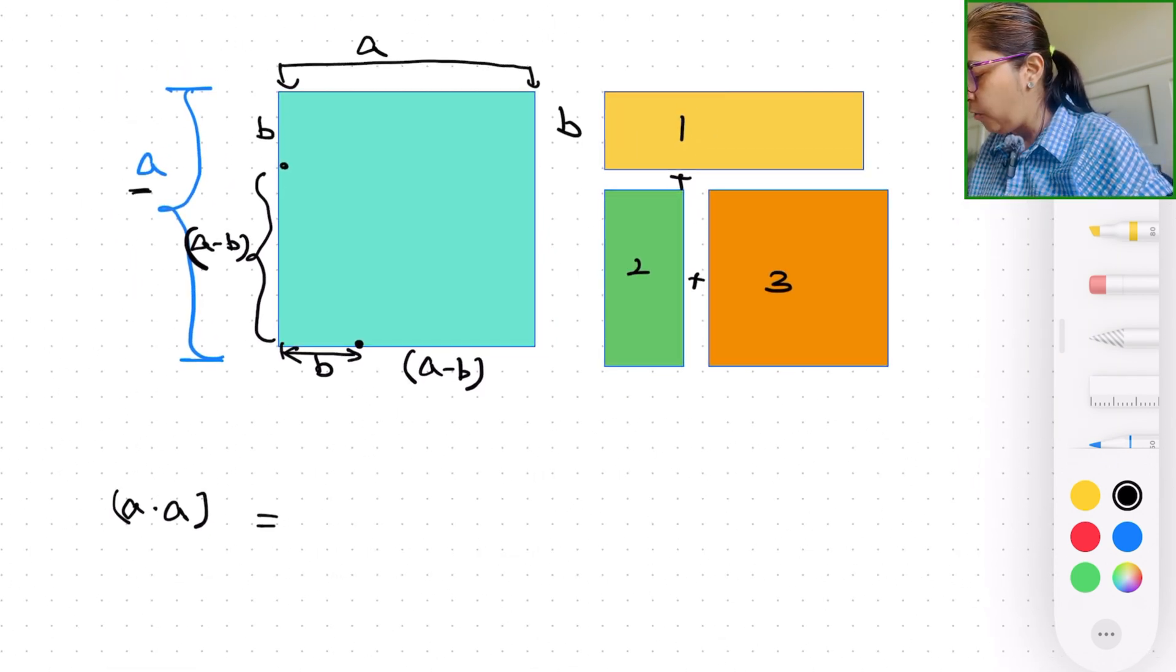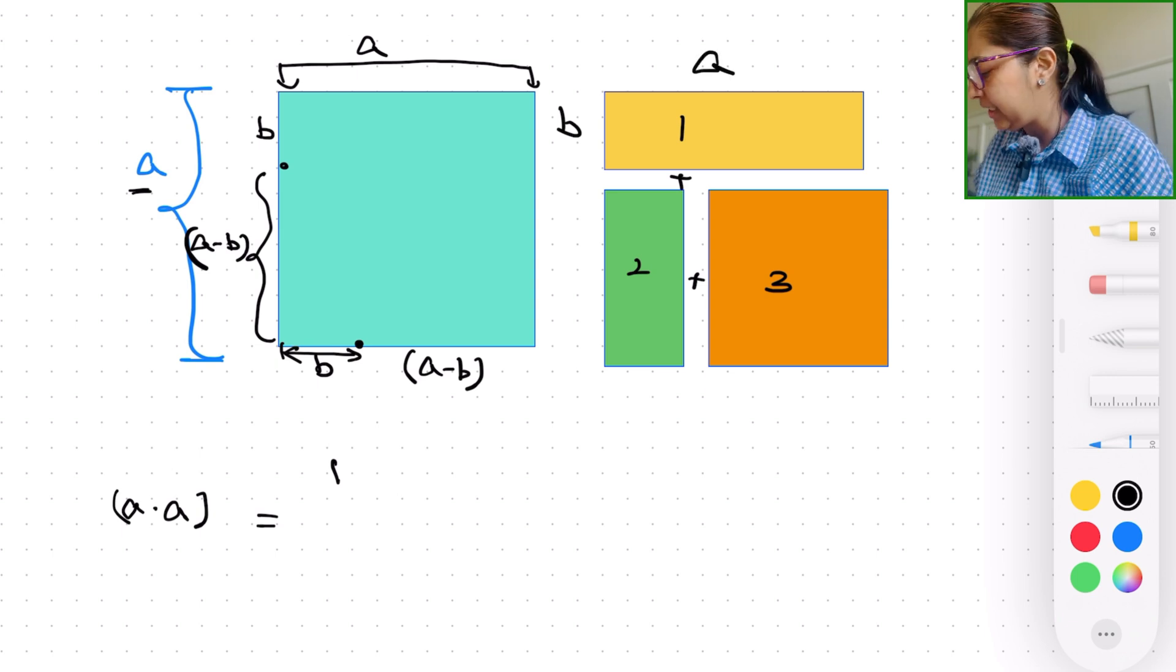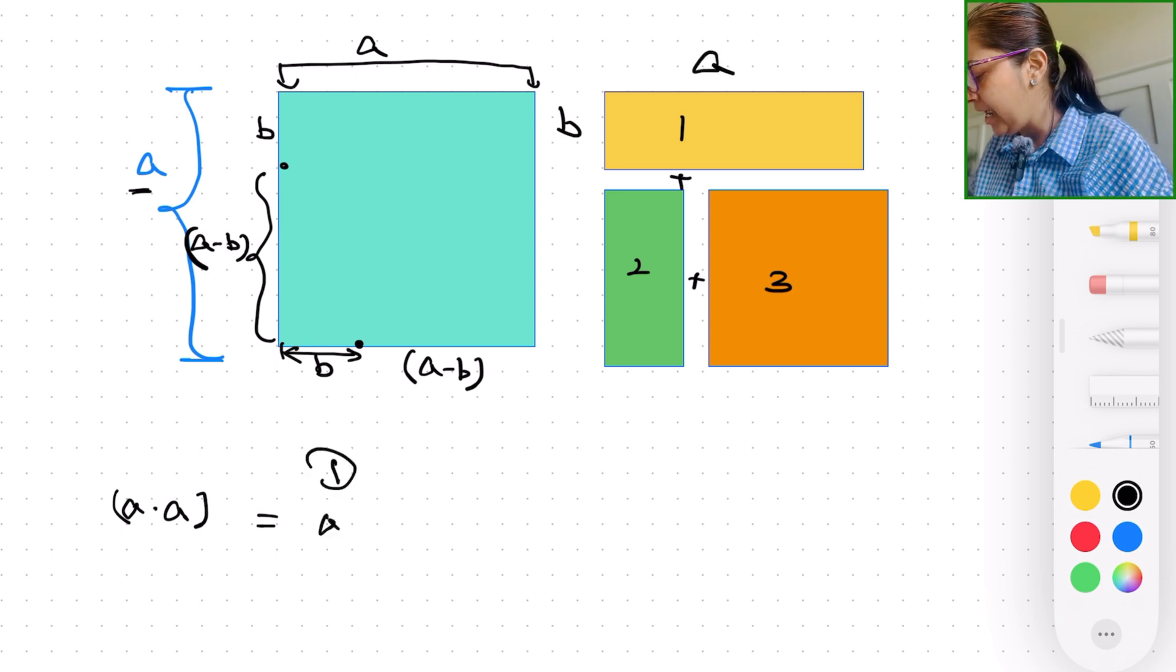And area of one, rectangle one, this is going to be side length a. So it is going to be a times b. Area of two,